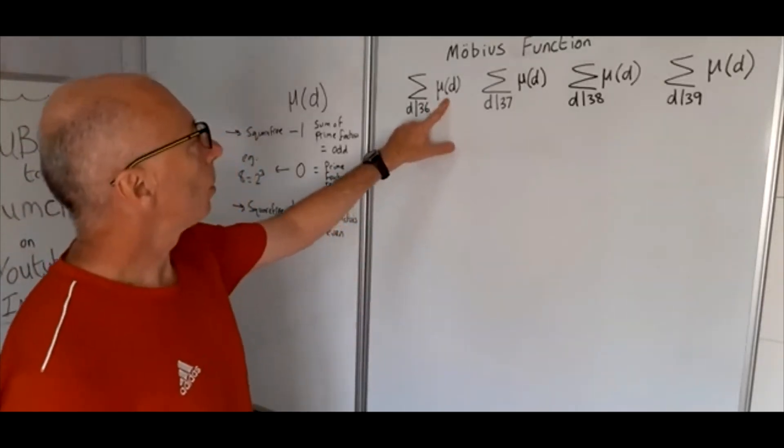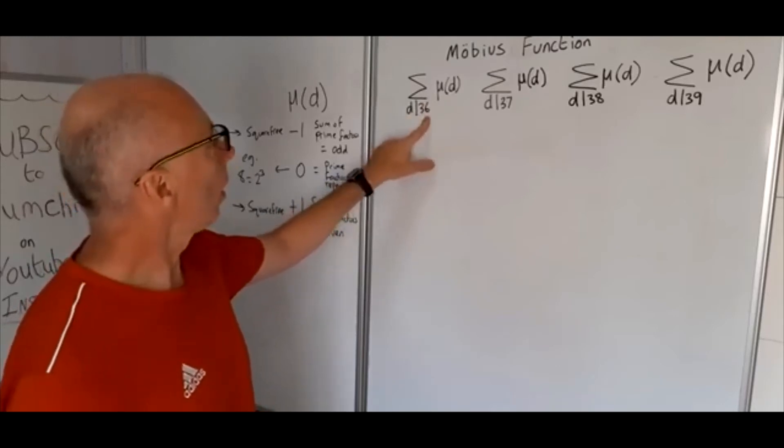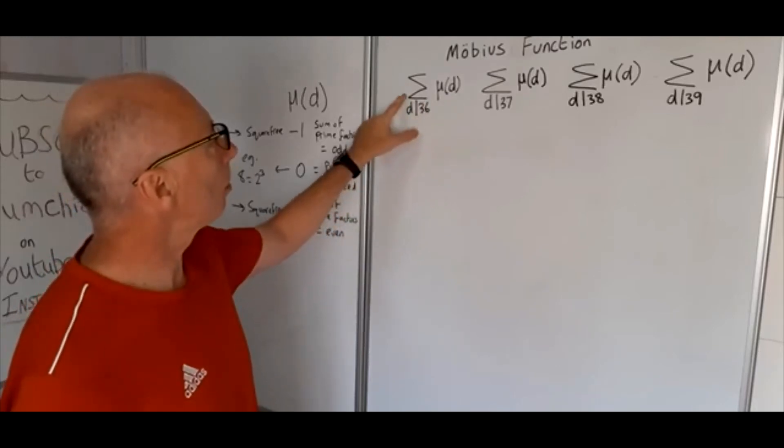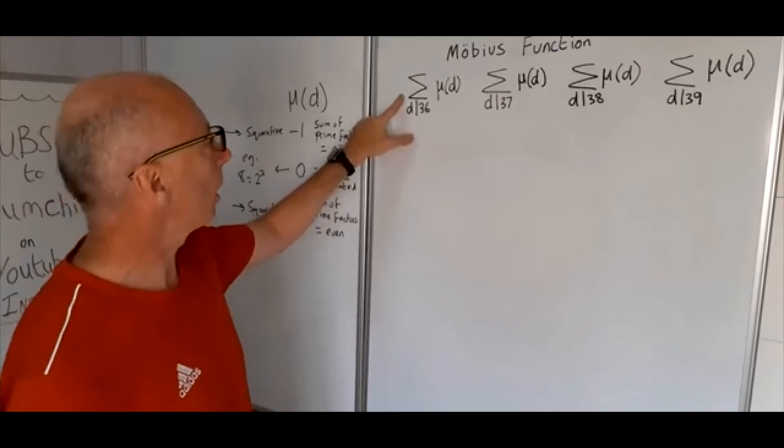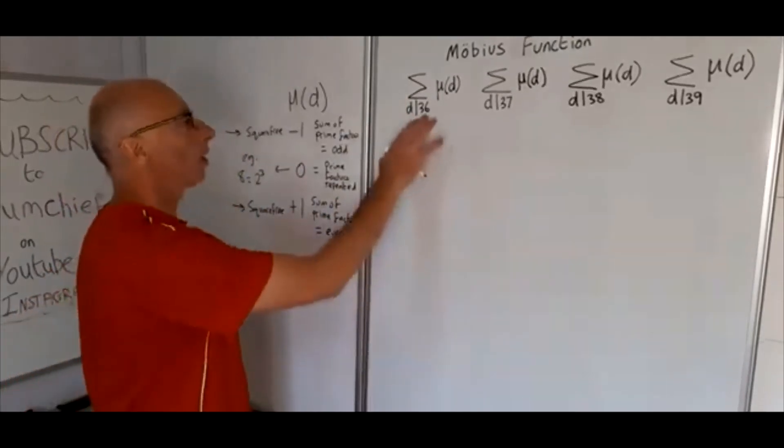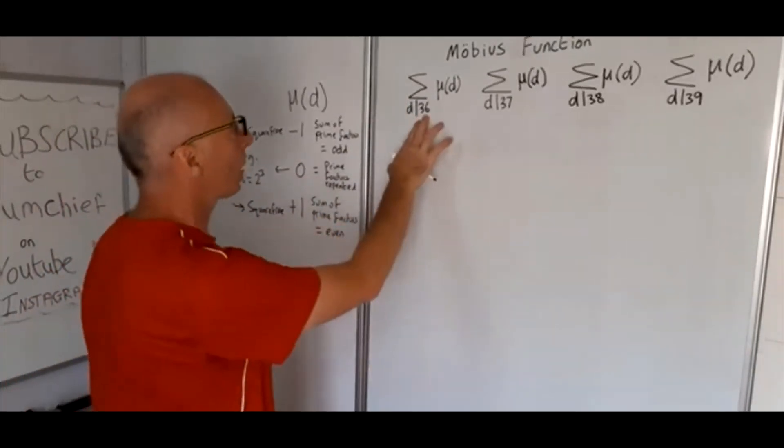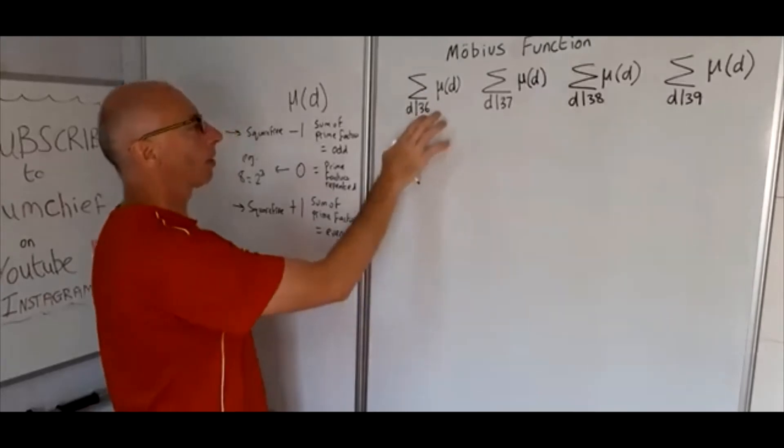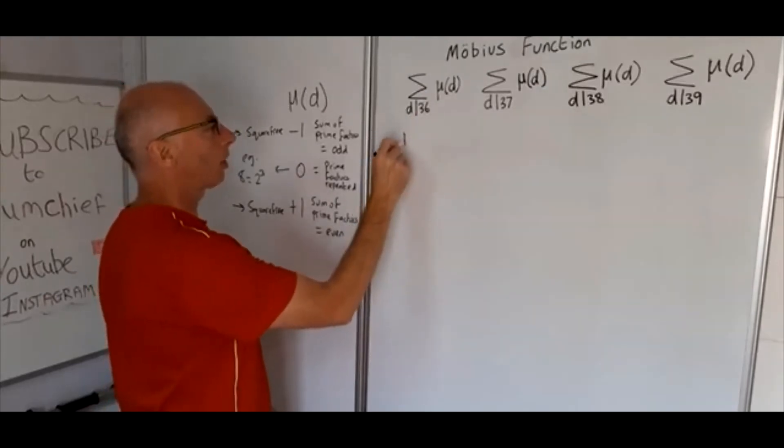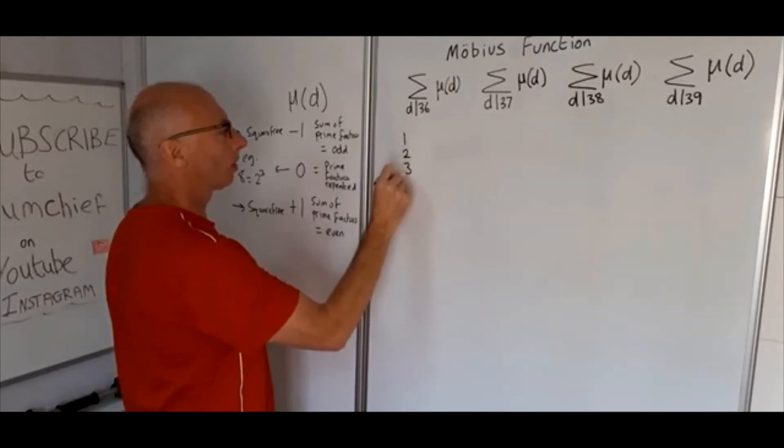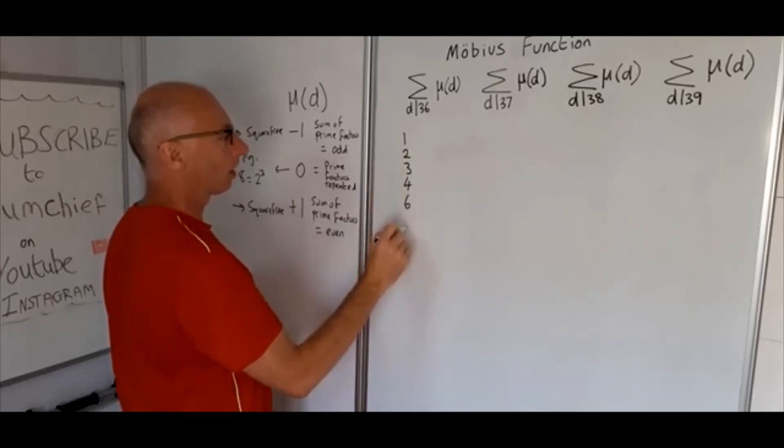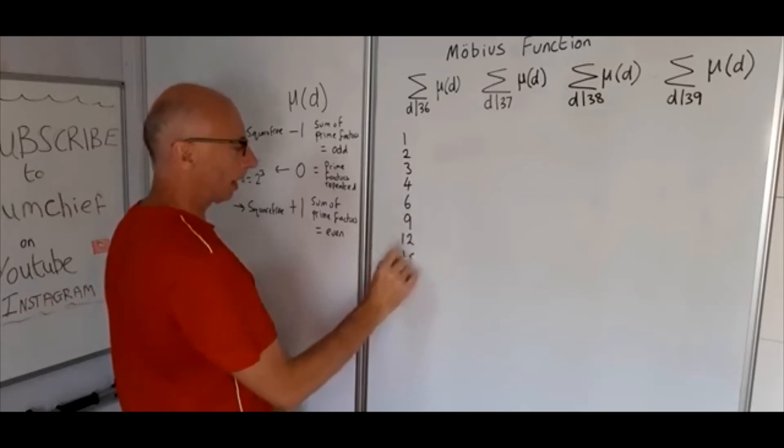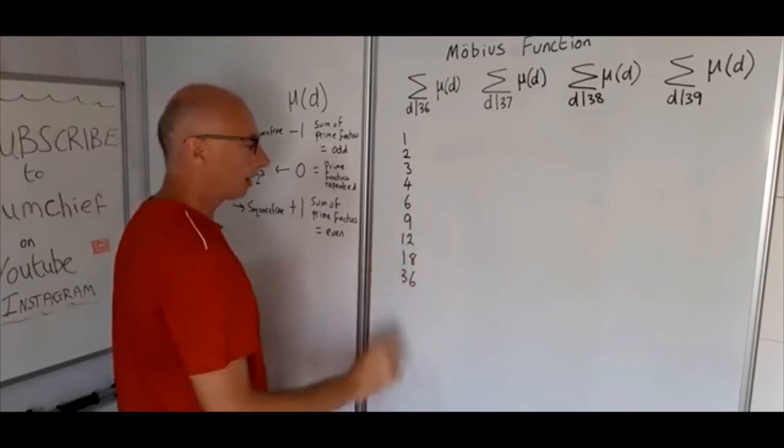So MU of D, we take the divisors of 36 and sum them all up, obviously this being notation here for the sum. So we're not interested in prime factors at the moment, just any of the factors. So for 36 we have 1, 2, 3, 4, 6, 9, 12, 18, and 36.